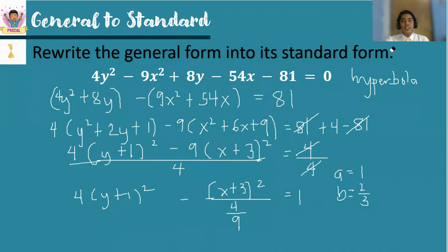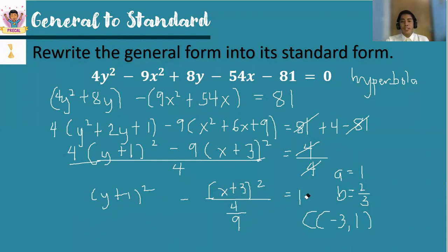Now let us identify the center of the hyperbola. The center is found from the standard form: the h value is negative 3 and the k value is negative 1. The final standard equation is (y + 1)² minus (x + 3)² over (4/9) equals 1.